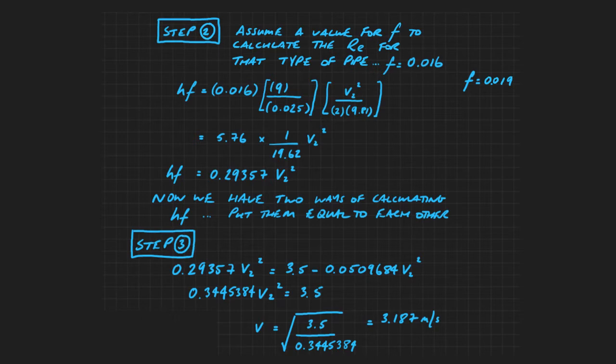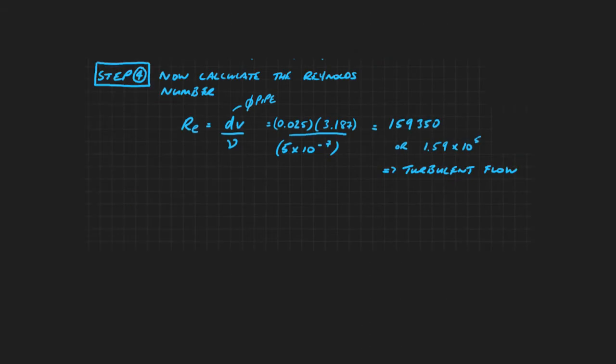The third thing we need to do now, step three, is compare that to the previous equation for HF. And we can then calculate the value of the velocity. In step four, we now calculate the Reynolds number. And we can do that because we're given the kinematic viscosity. And we can therefore calculate that this is in turbulent flow.